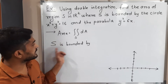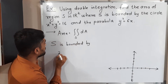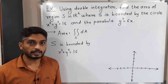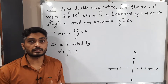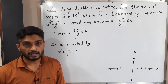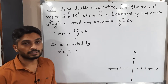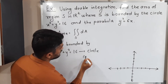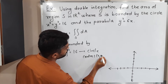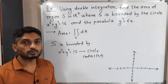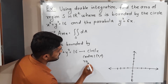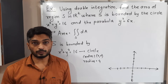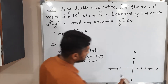The region S is bounded by two curves. The first equation is x² + y² = 16, that means 4². This is the standard equation of a circle with center (0, 0) and radius 4, since 16 = 4². So the radius is 4.